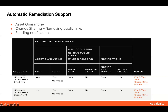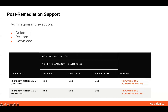The second remediation option is to change sharing or remove the public links — only direct links and not inherited links. We don't support inherited links for OneDrive and SharePoint. The third option is to send notifications from an admin account; there is no support for notifying via bot. For both OneDrive and SharePoint, post-remediation options are deleting the file, restoring the file, and downloading the file.